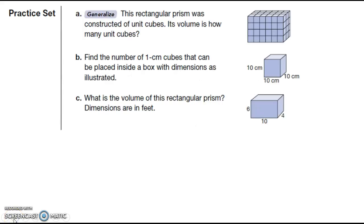So Lesson 70 is on volume and the volume of a rectangular prism, and a cube is a type of rectangular prism. The volume is equal to the length times the width times the height. So A says this rectangular prism was constructed of unit cubes. Its volume is how many unit cubes.